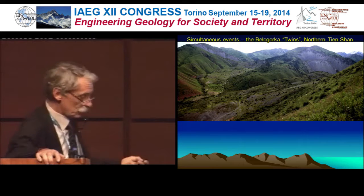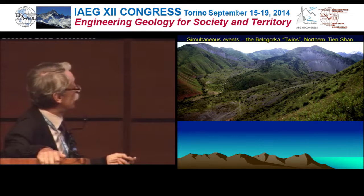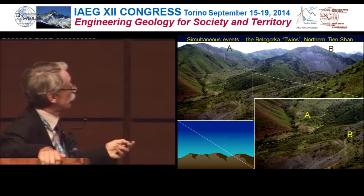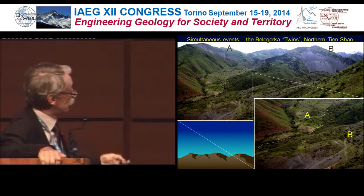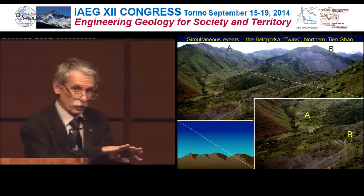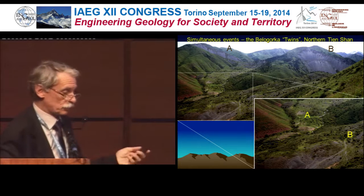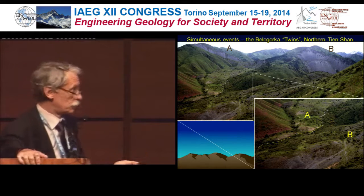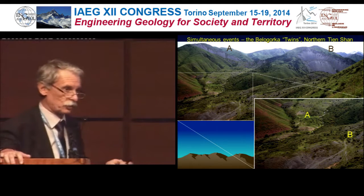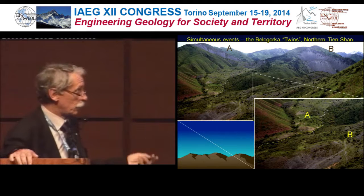Another example: the so-called Belagorka twins in northern Kyrgyzstan. We have two very distinct headscarves — one and another — and two bodies, and we see they are just nearby. If one were later than the other, it would overlay and overlap it, but here that is not the case. So these events occurred at the same time. We cannot say confidently that they occurred due to a seismic or aseismic trigger, but anyhow they occurred simultaneously.